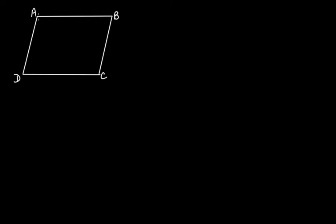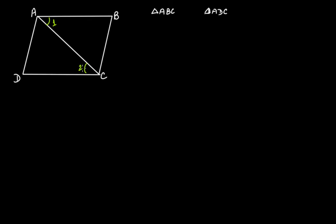For B and D, let's draw the diagonal between the vertices A and C. Now we get two triangles: triangle ABC and triangle ADC. Let this be angle 1, this be angle 2, this be angle 3, and this be angle 4.